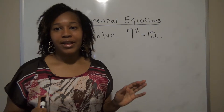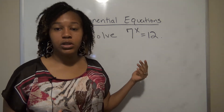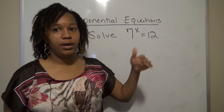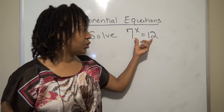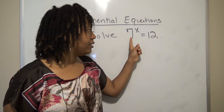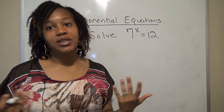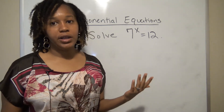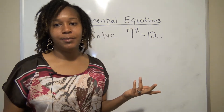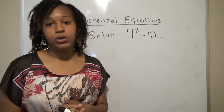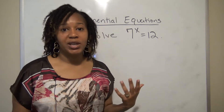In this first example we want to solve 7 to the x equals 12. This is an exponential equation because the variable is in the exponent. You could try to rewrite both sides with the same base, but seven to the second power is 49, which is way bigger than 12, so there's no integer power of 7 that equals 12. We need to use the second method.